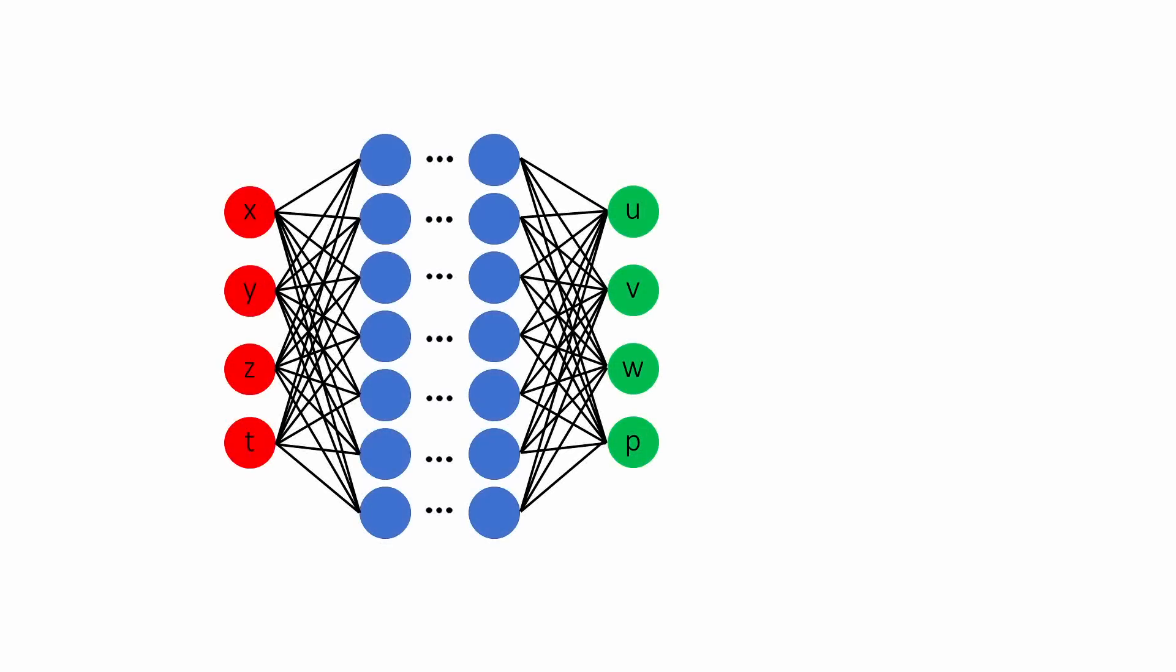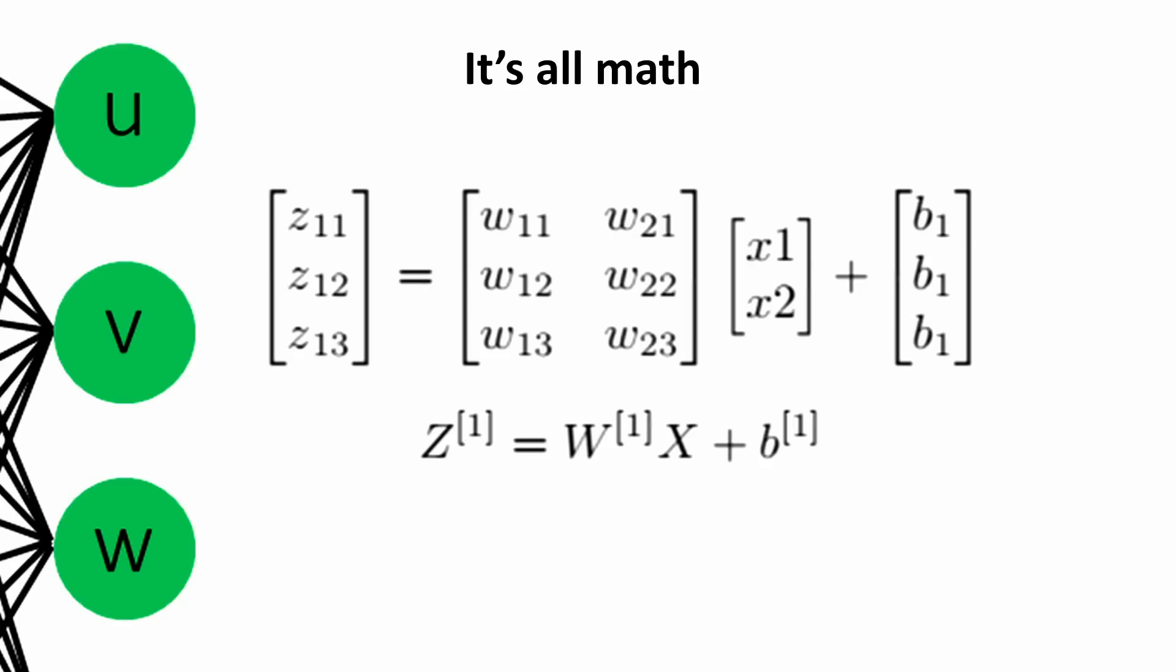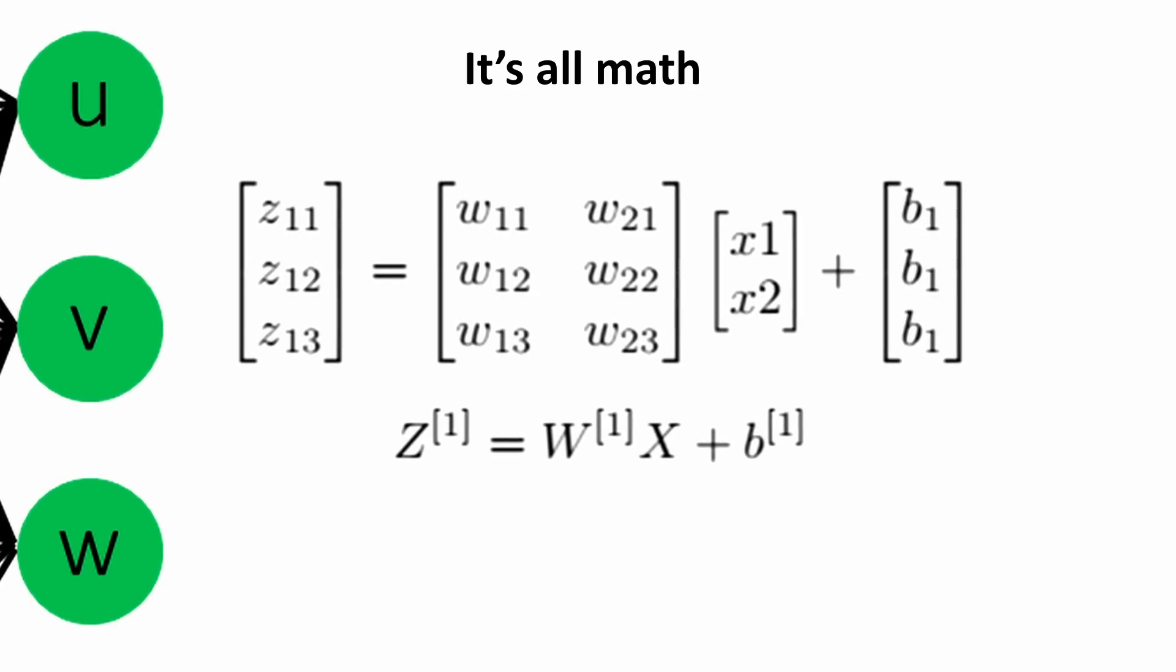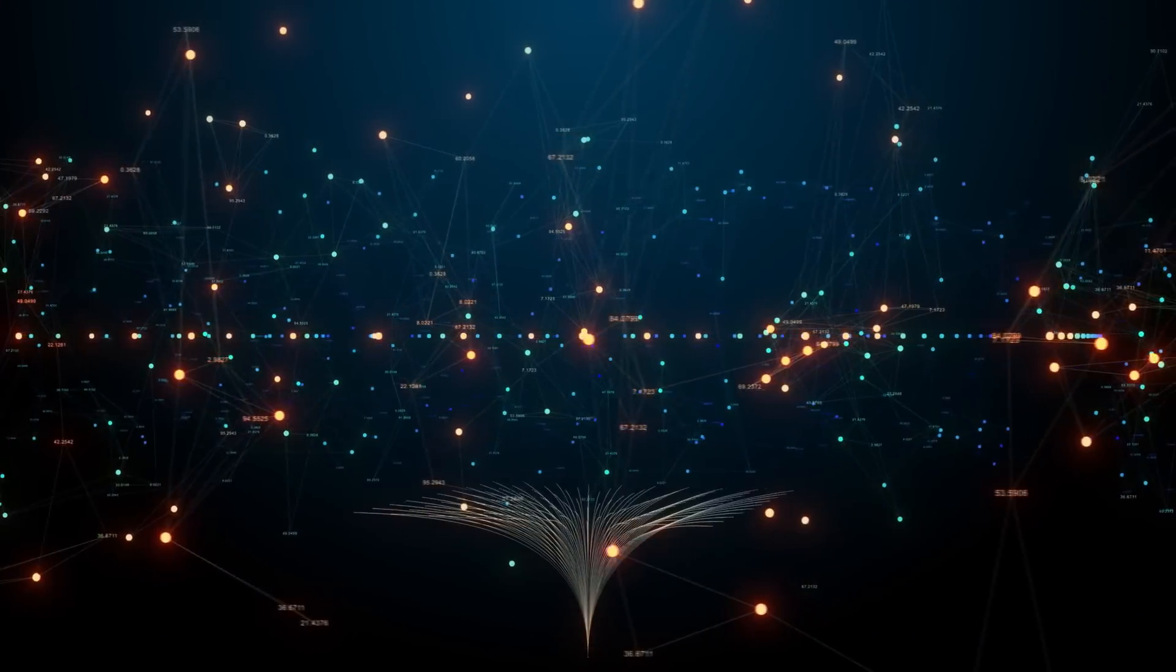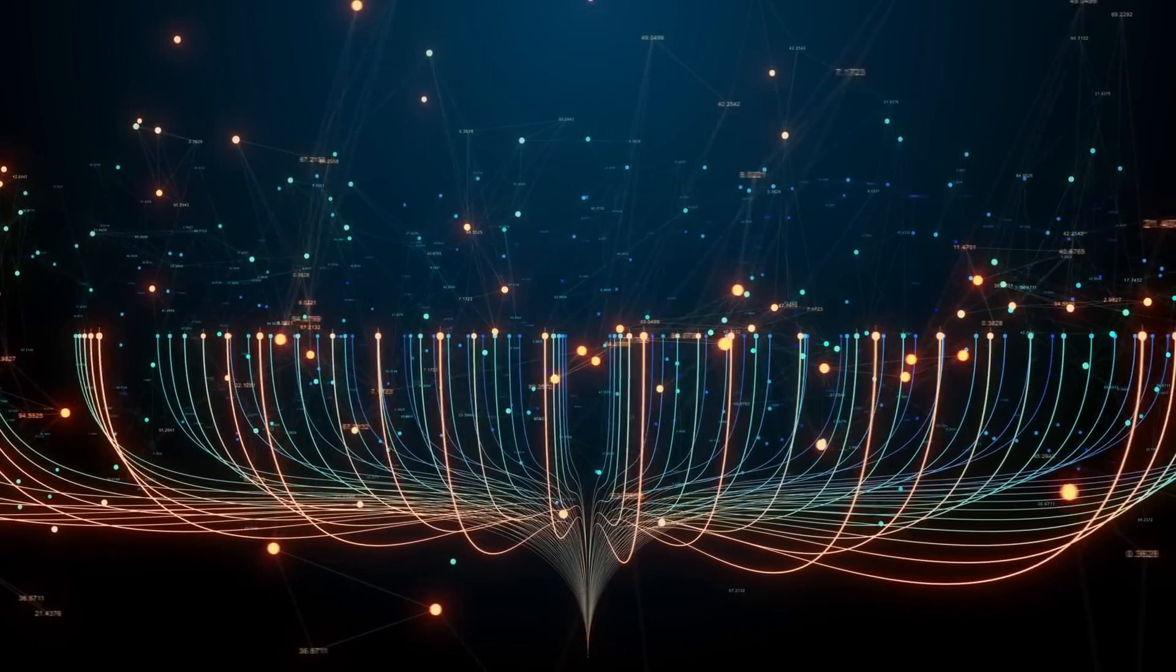First, you should understand that an artificial neural network, also called neural network for short, is at its core a mathematical equation. No more, no less. A powerful neural network is typically a very complex equation. But nevertheless, it's just math.